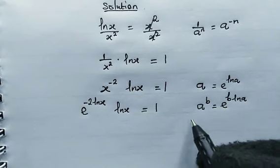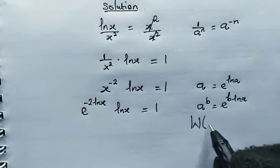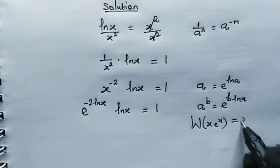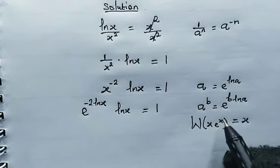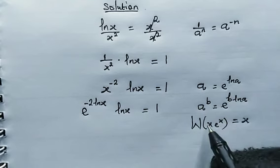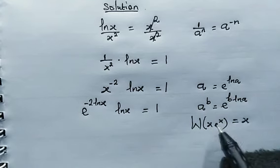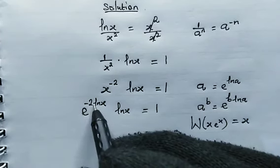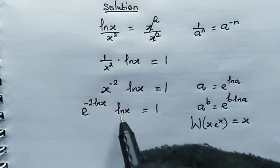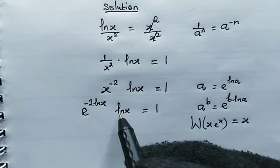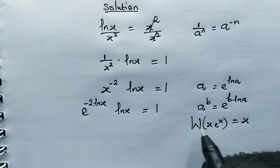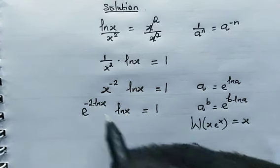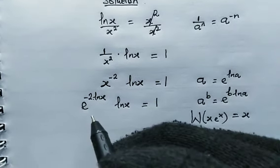Now we want to make use of the Lambert W function. Remember, when it has this argument, this simplifies to x, because the power of e and the coefficient are exactly equal. So we write over here, the power of e is negative 2 multiplied by the natural log of x, and the coefficient is just the natural log of x. We can't introduce it right now because the power and the coefficient are not yet equal.